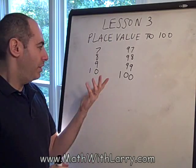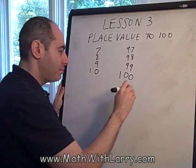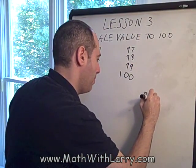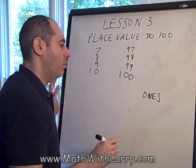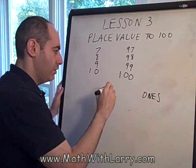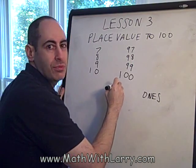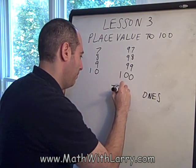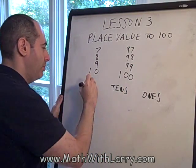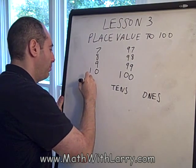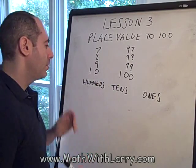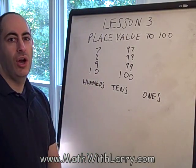Now let's take a look at what our columns really mean. Our 1's place is always on the right — some people call that the units place. Just think of it as a place for $1 bills. To the left of that, we have the 10's place — think of that as where we put our $10 bills. And to the left of that, we have the 100's place — think of that as where we put our $100 bills.